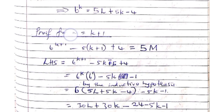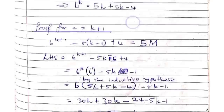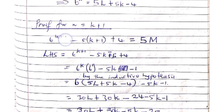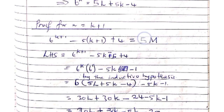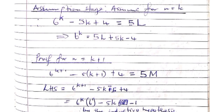Now we move on to the thesis stage. We are substituting k plus 1 for n. So we get 6 to the k plus 1 minus 5 times k plus 1 plus 4, and we set this equal to 5m. We are going to assume it's going to give us a multiple of 5, so it's 5m, where m represents any expression that we might get. The bottom line is we have to get 5 as a factor of a certain expression.